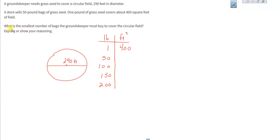What is the smallest number of bags the groundskeeper must buy to cover the circular field? We're covering the field so this is obviously area. So we need to make another table for our Dr. Rico action, calling Dr. Rico right away and squaring that next one.